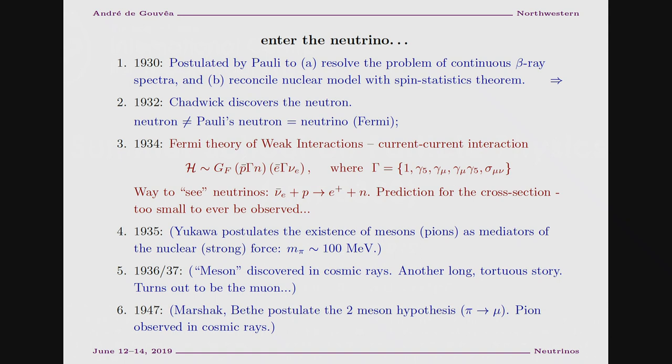By the mid-1930s, people had given up the nuclear physics model from the 1920s. The much better model said nuclei are made out of protons and neutrons, and the neutron would decay by emitting an electron and a neutrino — beta decay — without needing electrons inside the nucleus. That model works much better and we still believe it today. The next step was to understand how protons and neutrons talk to each other to stay bound inside a nucleus.